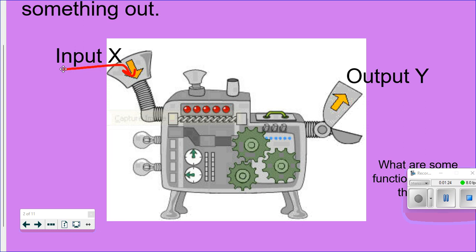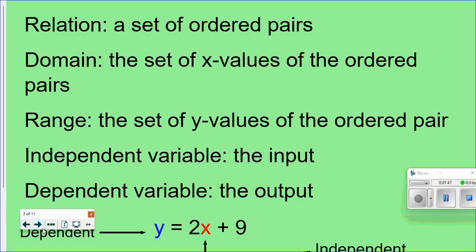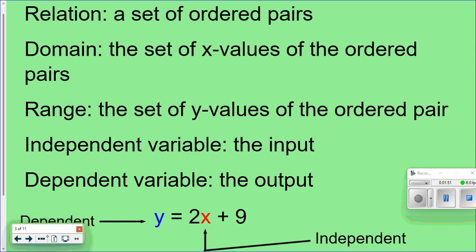It has to come out in a different format. Another example is a pop machine — you put in money and out comes a pop. A washing machine is another example: you put in dirty clothes and clean clothes come out. When you think of a function, it just means you're putting something in and getting something different out.